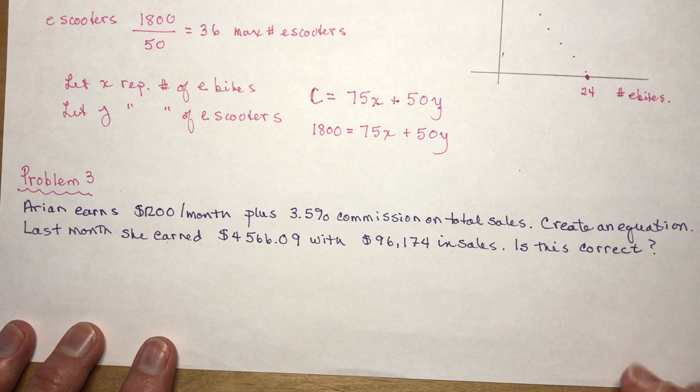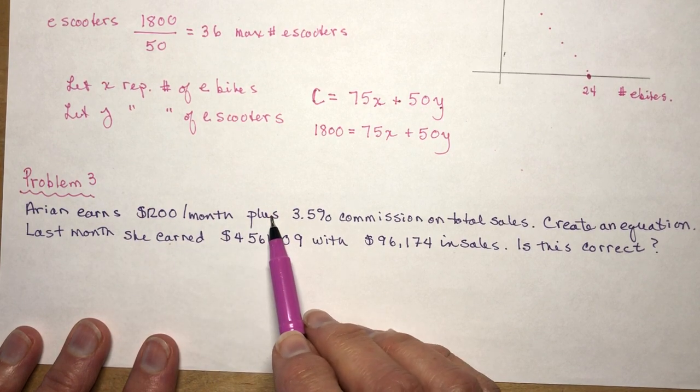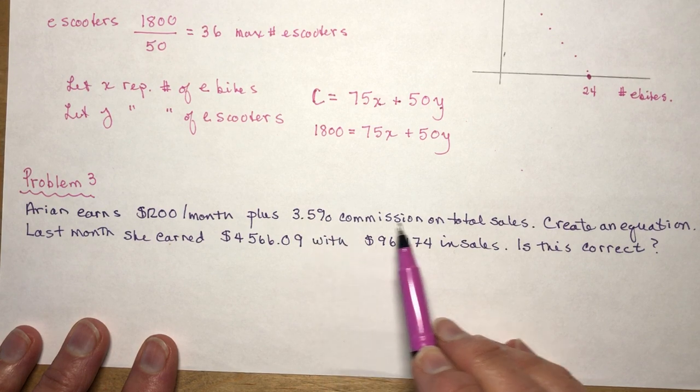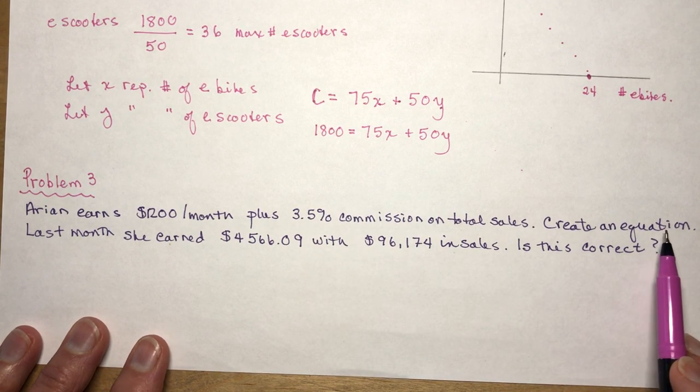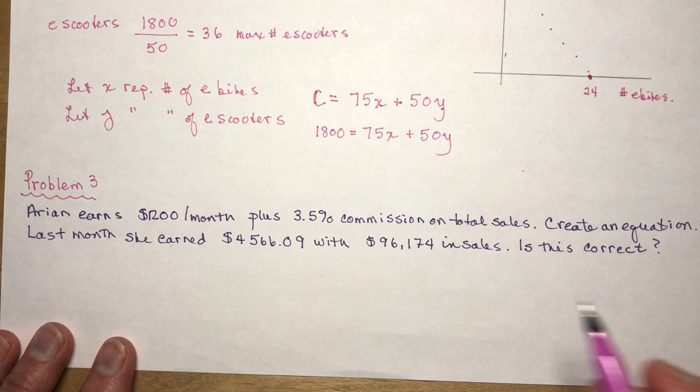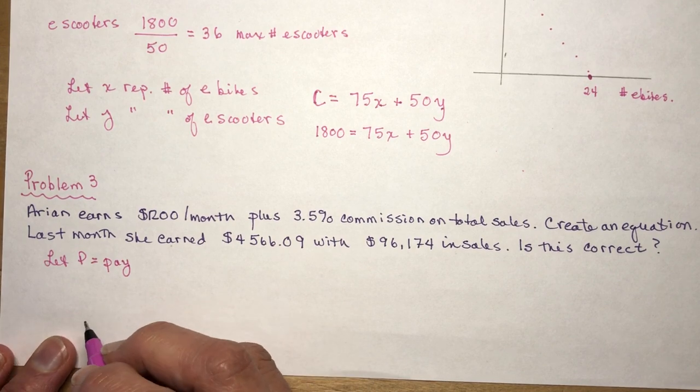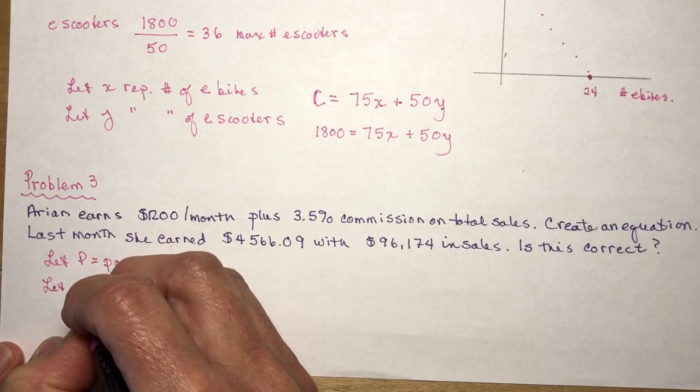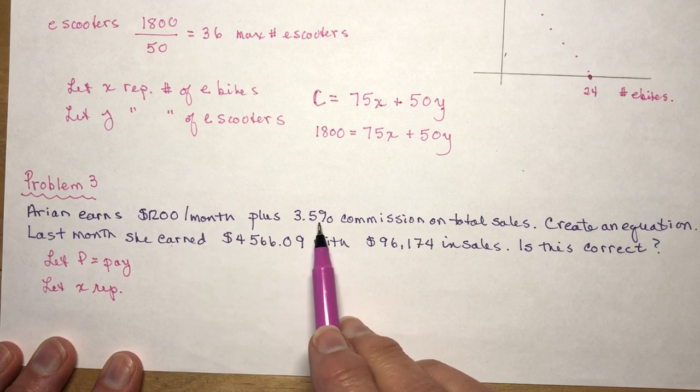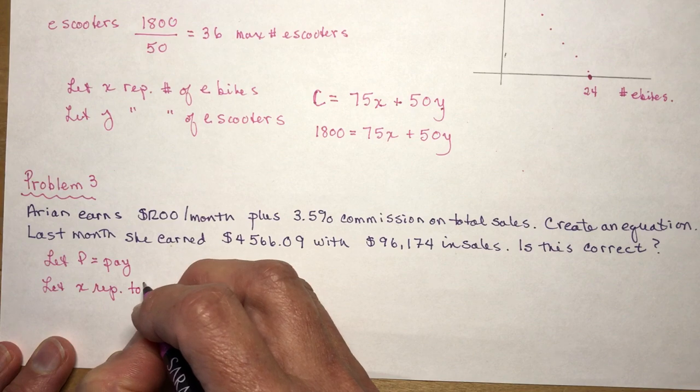Okay, so the last problem is a little bit different because we have a commission and salary. Arianne earns $1,200 per month plus 3.5% commission on total sales. So whatever she sells, she gets 3.5% of the sales. Create an equation. So let's create an equation for her salary and we'll call it pay. Let p equal pay, it's her paycheck. And let x represent - what do we need? What is our unknown here? Well, this is a constant. She gets this every month no matter what she sells. But the 3.5% is commission on total sales. So let x represent total sales.